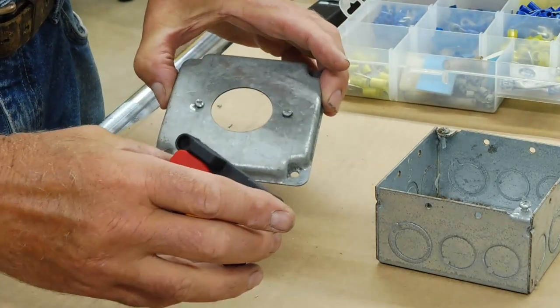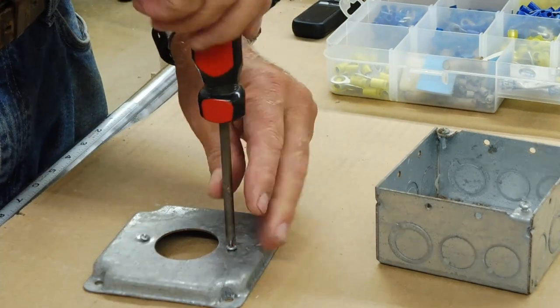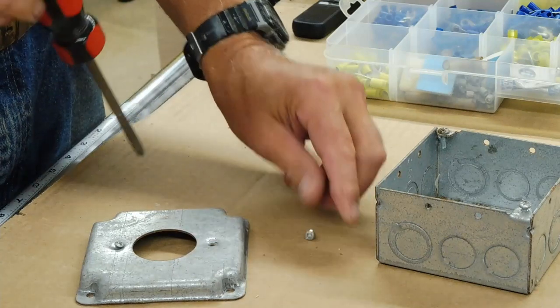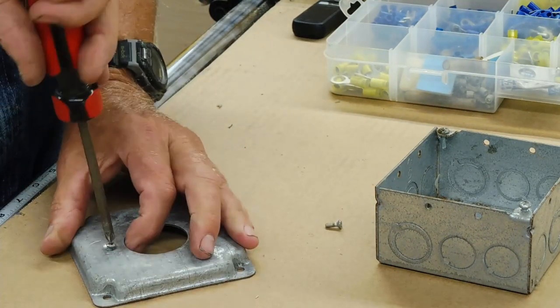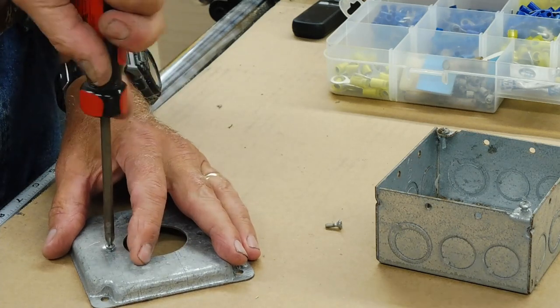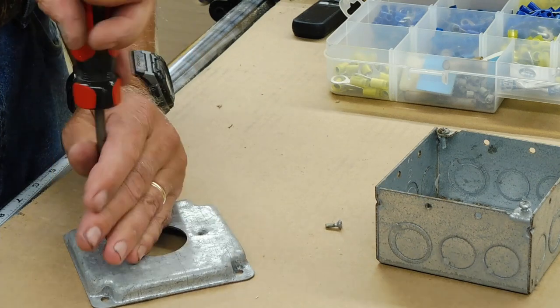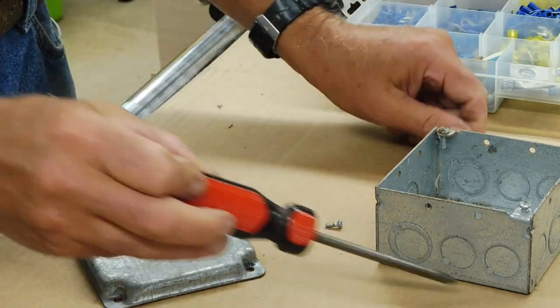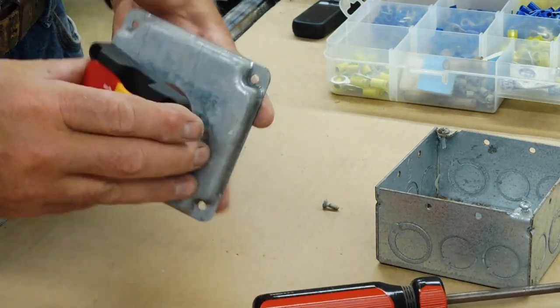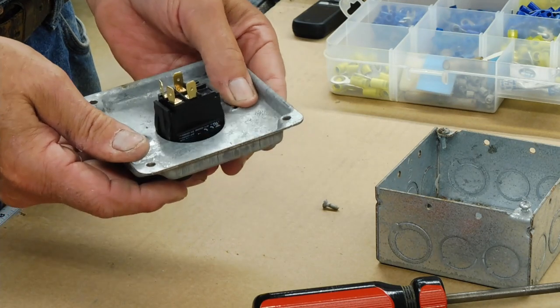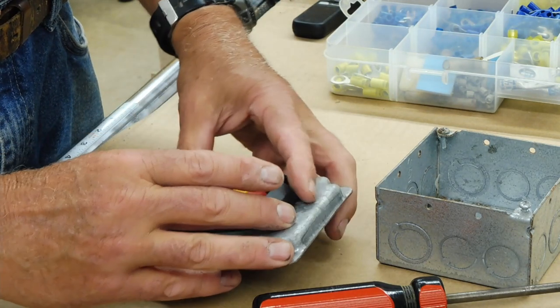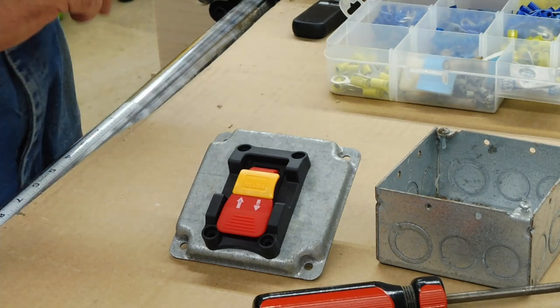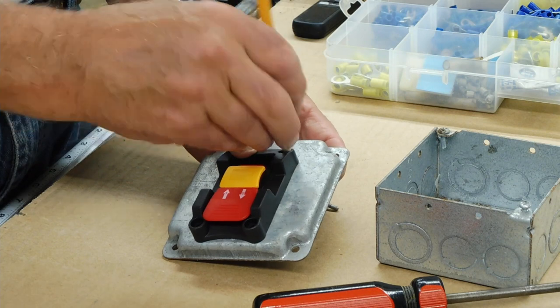So we've got our cover here. We've got the switch. One of the first things you'll want to do is take out the screws that come with it. You won't be using those. They'll just be in the way. Then place your switch into the opening. As you can see here, it fits nice and snug.